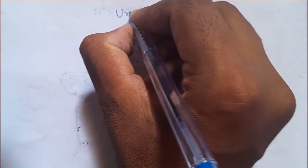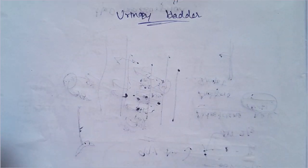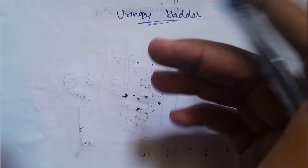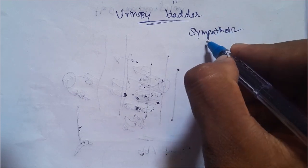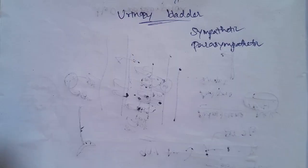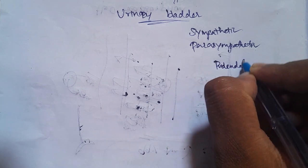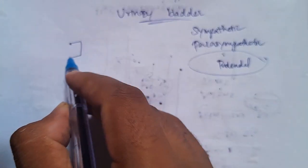Welcome. Today our video is about the nerve supply of the urinary bladder. We have two types of nerve supply of the urinary bladder: the Sympathetic Nervous System and the Parasympathetic Nervous System — this is the Autonomic Nervous System. The external sphincter is one of the skeletal somatic nerves, alongside sympathetic and parasympathetic nerves.